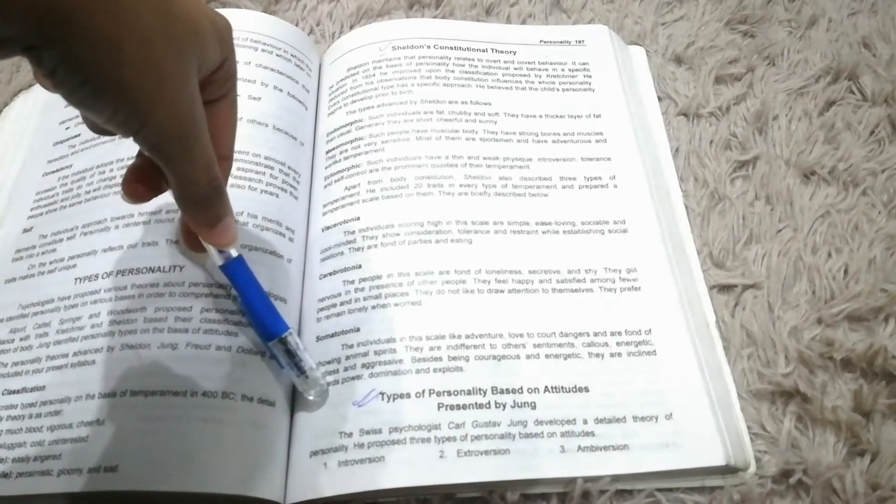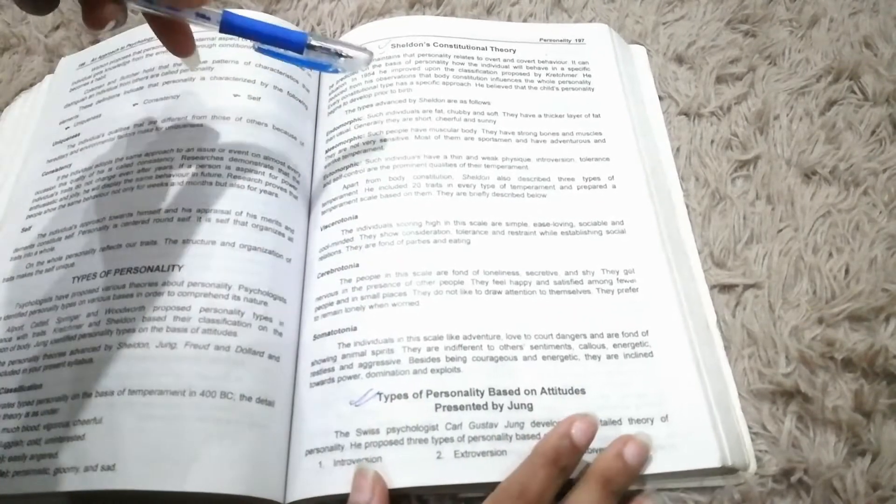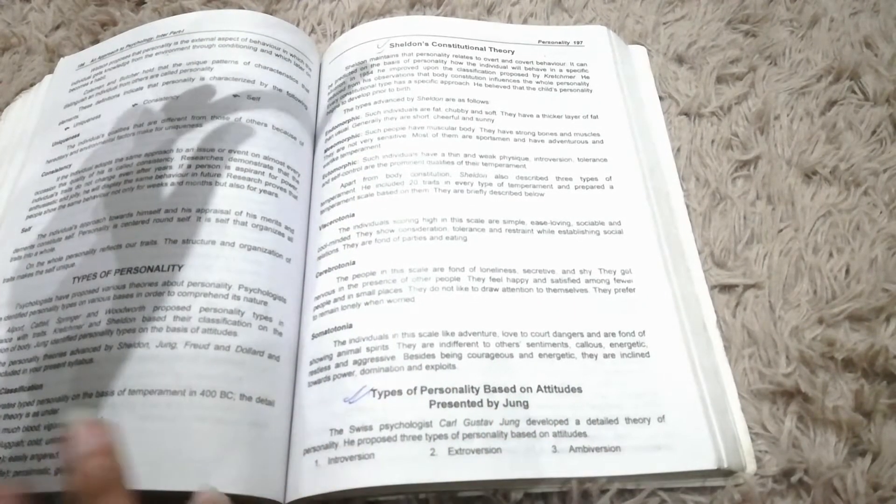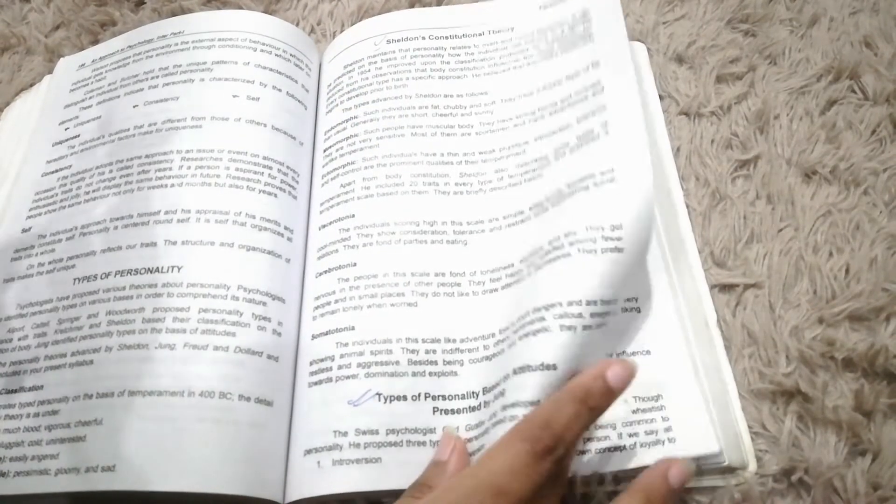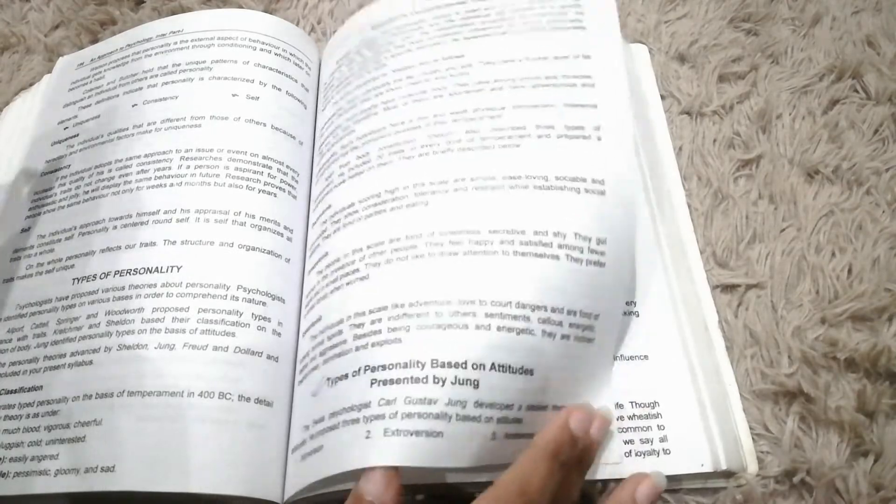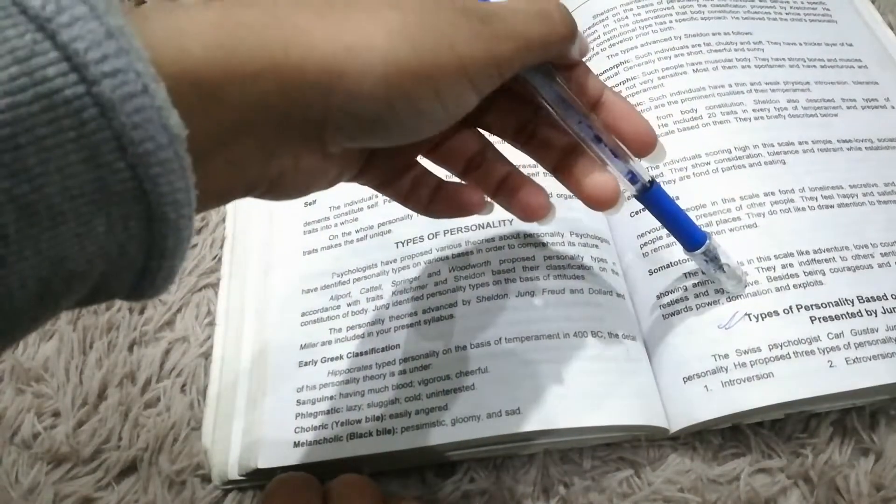Presented by Jung. This is also important. Introversion, Extroversion and Ambiversion. Introversion and Extroversion - you can ask short questions. What is Ambiversion you can ask, but more introversion and extroversion. This is also long. You can ask long questions about Types of personality.